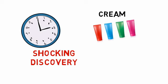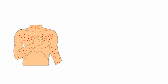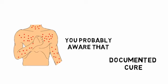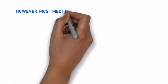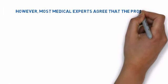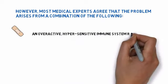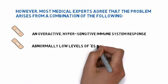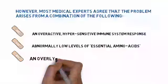Including the number one reason why nearly all eczema treatments flat-out don't work. If you've been suffering from eczema for any length of time, you're probably aware that there is no documented cure. However, most medical experts agree that the problem arises from a combination of the following: 1. An overactive, hypersensitive immune system response. 2. Abnormally low levels of essential amino acids. 3. An overly toxic body.